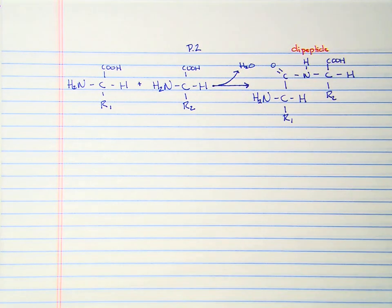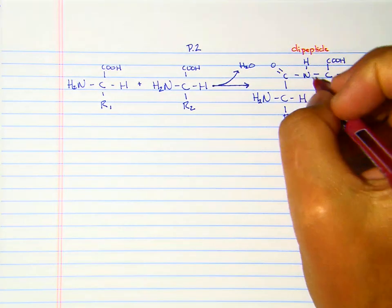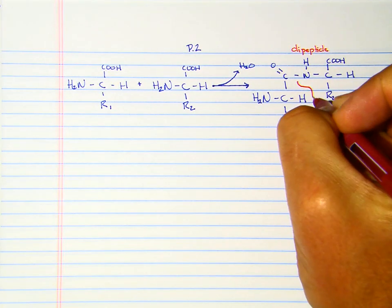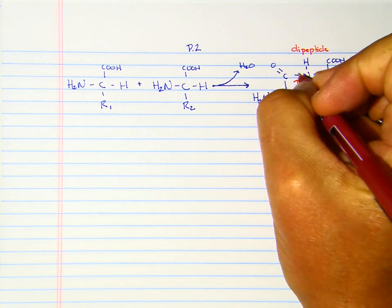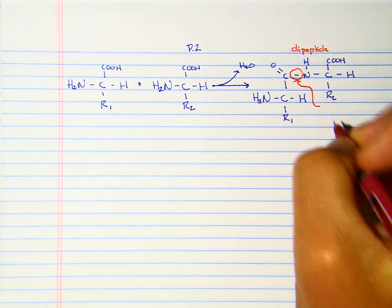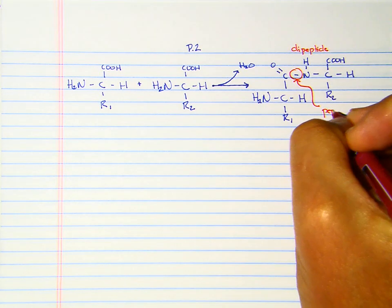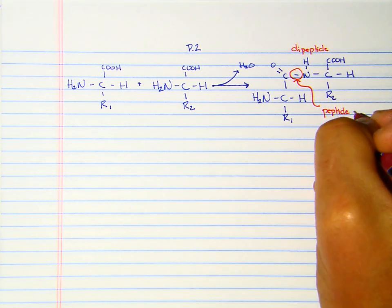A dipeptide would be to proteins what maltose is to starch. This right here is a peptide bond.